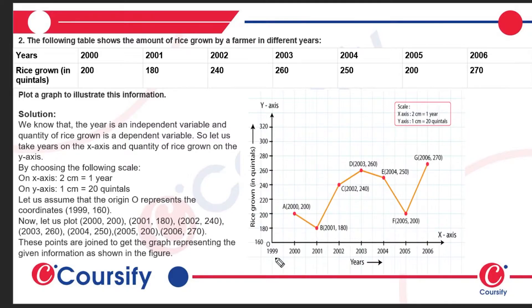Now we have plotted the years: 2000, 2001, 2002, 2003, 2004, 2005, and 2006. So we have plotted 7 points in total.